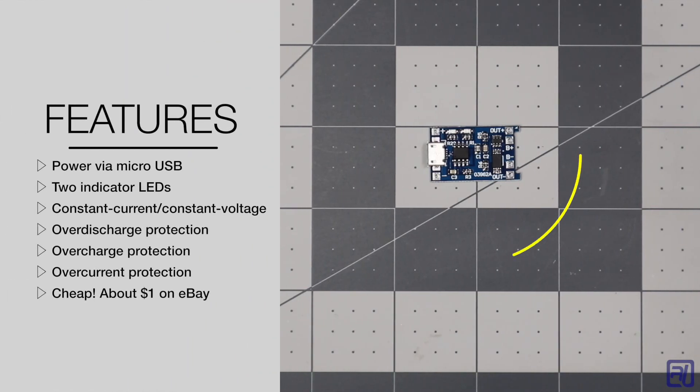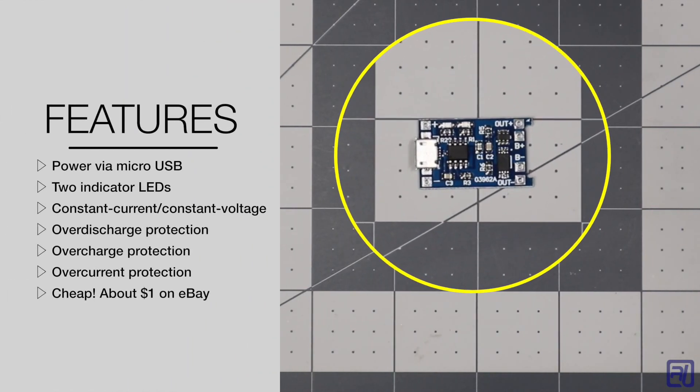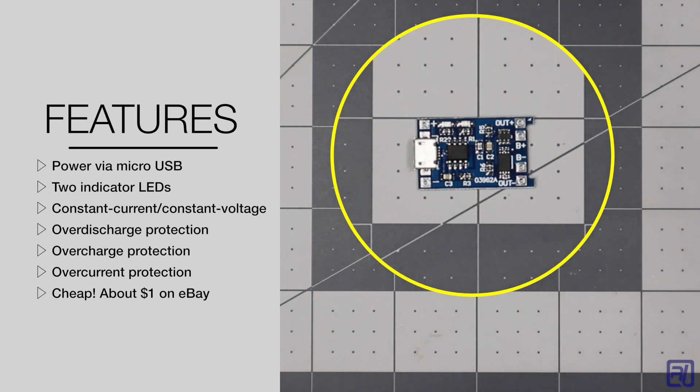The TP4056 charger board is very useful for charging single cell lithium batteries. It's got a ton of functionality packed into a tiny little package. You can put this board in pretty much any of your projects. It's so small. It's very affordable. You can find these boards on eBay for about a dollar free shipping.